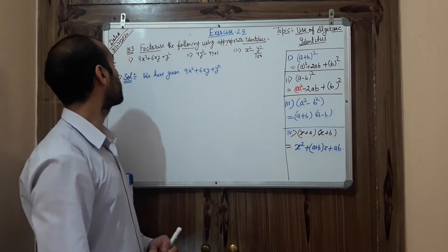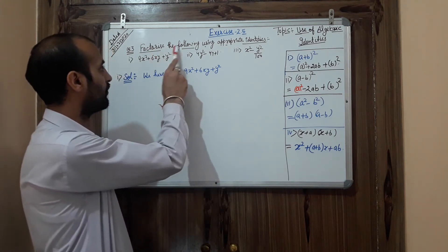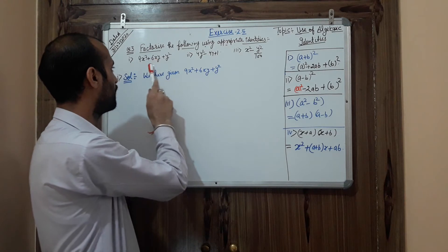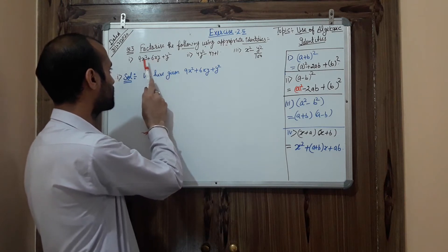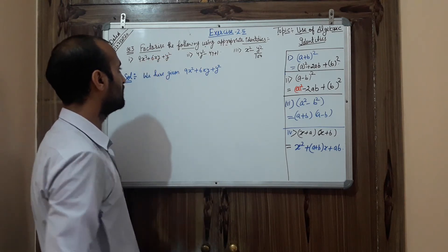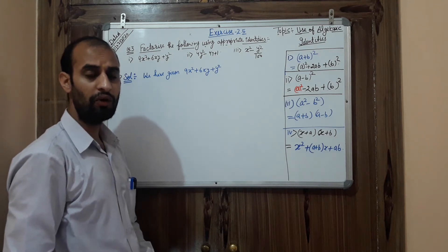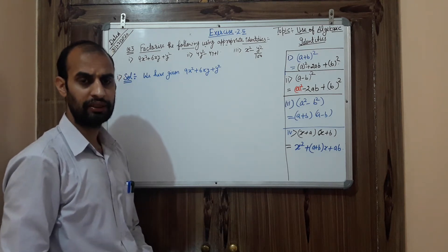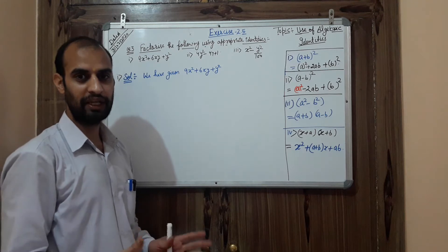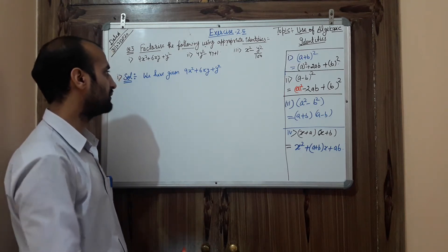Have a look at question number 3: Factorize the following using the appropriate identity. The first part is 9x² + 6xy + y². Before starting, you must know how to compare identities, so let's see how to compare.